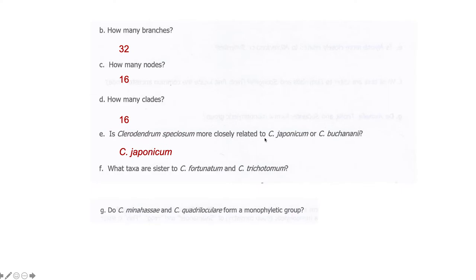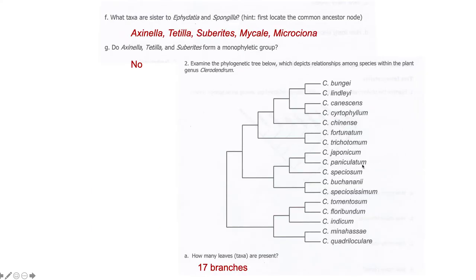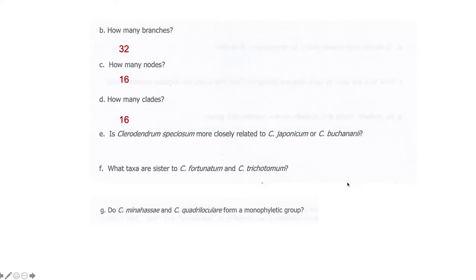Clarodendron speciosum was more related to japonicum. If we go back, we'll see. So speciosum here is on the same node, shares a node with japonicum. Buchanii is down here on a separate node. These were the taxa that were sister to those two. And these two do form a monophyletic group.